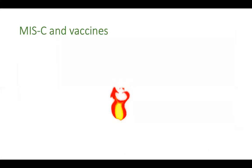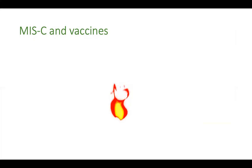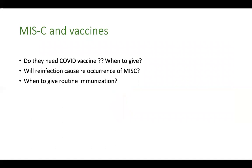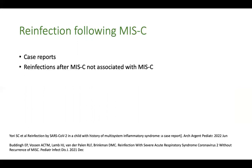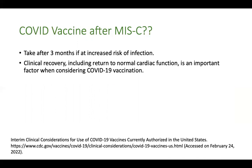What about children who have experienced MIS-C? Do they need COVID vaccines, and when? Will reinfection cause recurrence of MIS-C? There are no large-scale studies on this, but a couple of case reports suggest that reinfection with COVID is not associated with reappearance of MIS-C symptoms. If you want to give a COVID vaccine to a child who has already experienced MIS-C, give it only three months after MIS-C if the child remains at high risk for infection, and ensure there has been complete recovery including normal cardiac function.